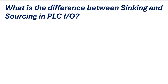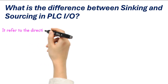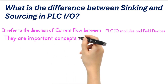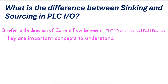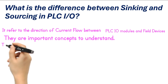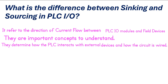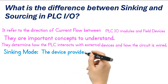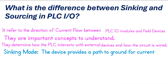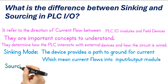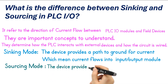What is the difference between sinking and sourcing in PLC I/O? Sinking and sourcing refer to the direction of current flow between a PLC I/O module and an external field device. These are important concepts when working with PLC I/O modules, as they determine how the PLC interacts with external devices and how the circuit is wired. In sinking mode, the device provides a path to ground for current, meaning current flows into the I/O module. In sourcing mode, the device supplies current to the I/O module, meaning current flows out of the module.